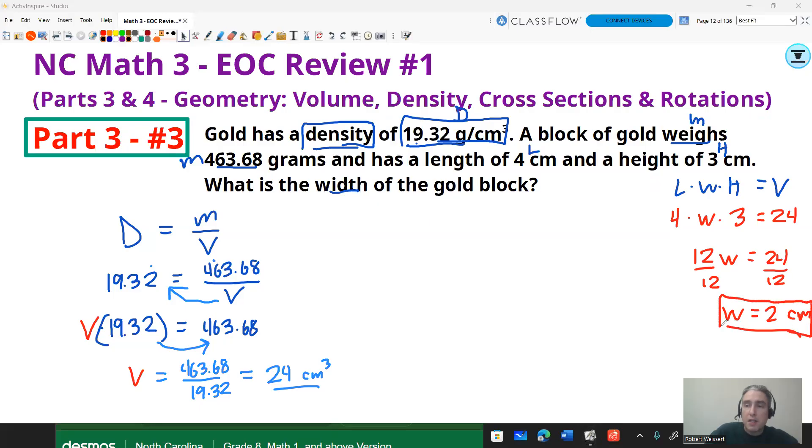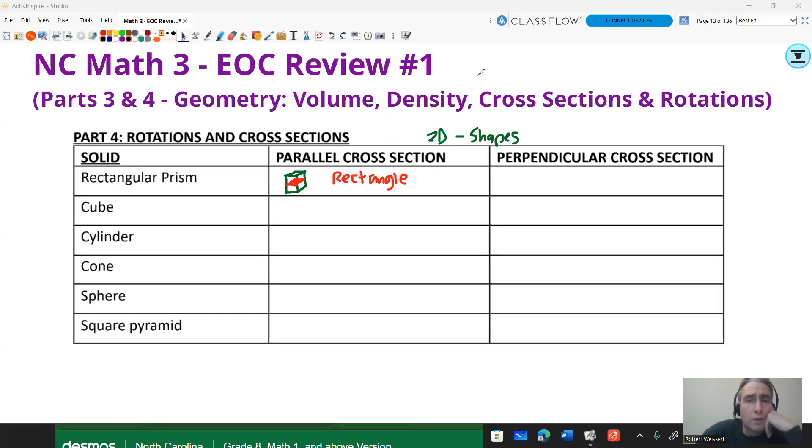The next section is going to go over cross sections and rotations. So let's dig right into it. We're going to go over some common cross sections. The cross section is just the 2D shape. So if you take a rectangular prism and you go parallel to the base, you're going to get a rectangle. Perpendicular, straight up and down, will also yield a rectangle for a rectangular prism.